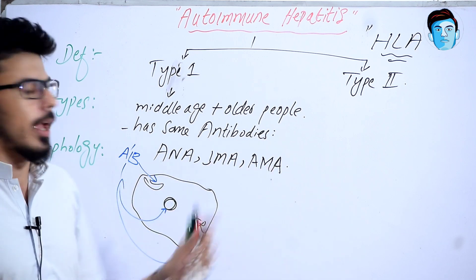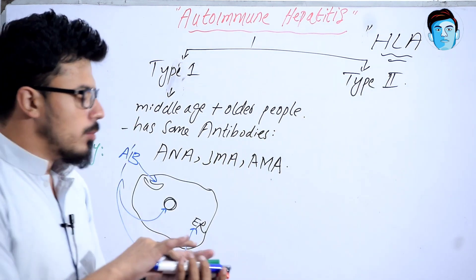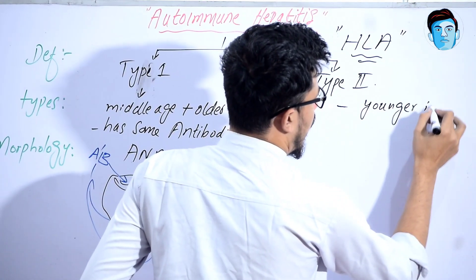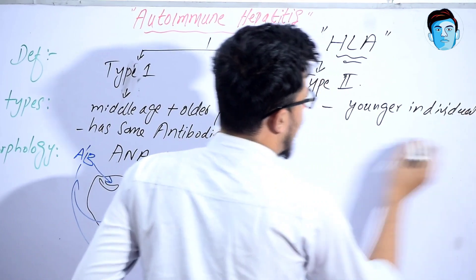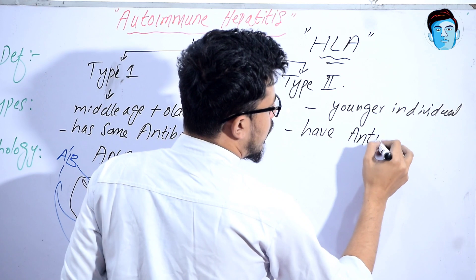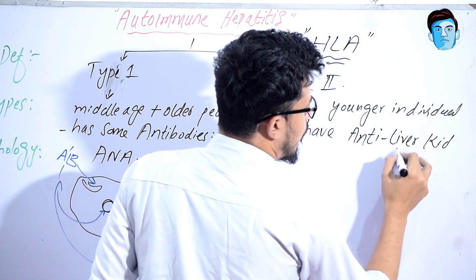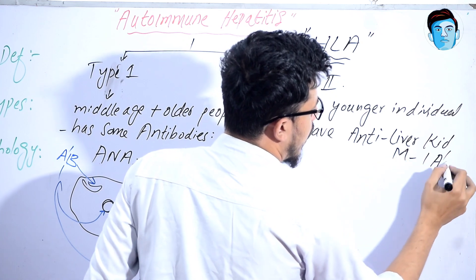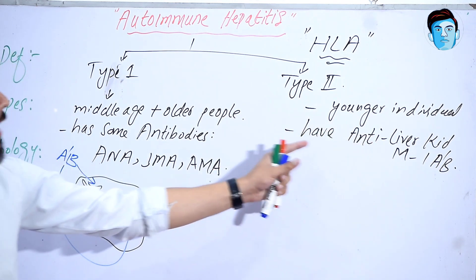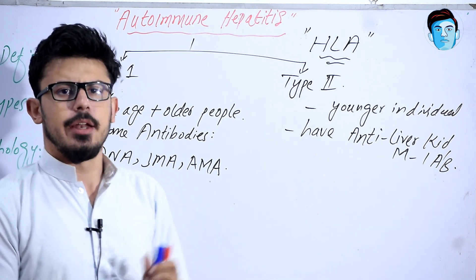Type 2 autoimmune hepatitis mostly occurs in younger individuals. It has anti-liver kidney microsome type 1 antibody (anti-LKM-1) and anti-liver cytosol type 1 antibody, along with other related antibodies.